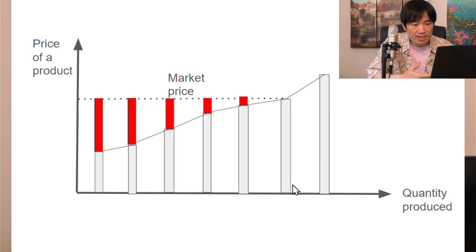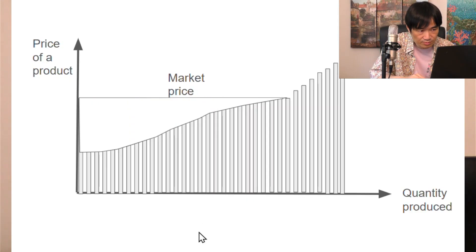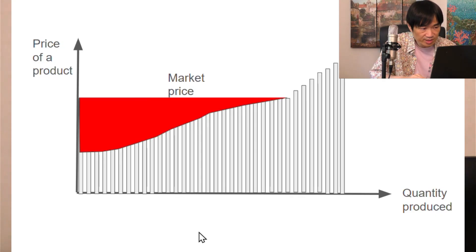But in reality, we don't have just seven units, right? For any product, we're talking about maybe 7,000 or 7 million or even more. So these bars will be squeezed together really tight like this. That means when we add up all the producers' profit, we're really calculating the area of this shape. All the bars are squeezed into a shape.